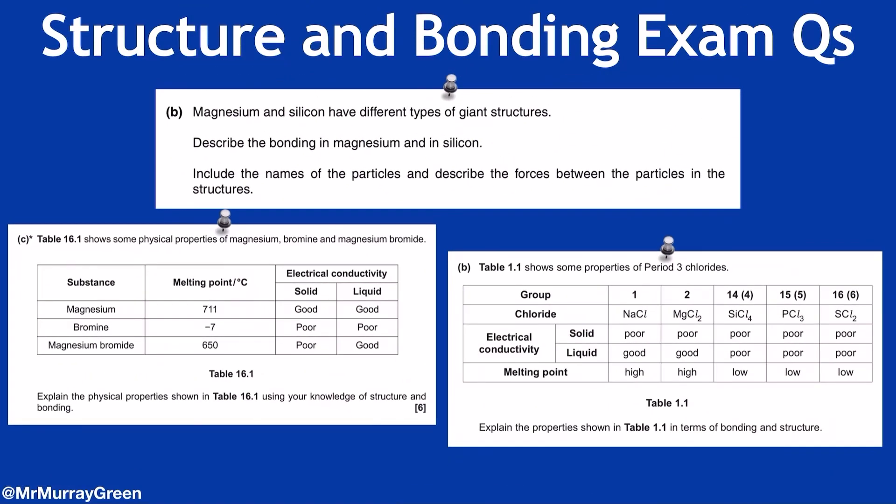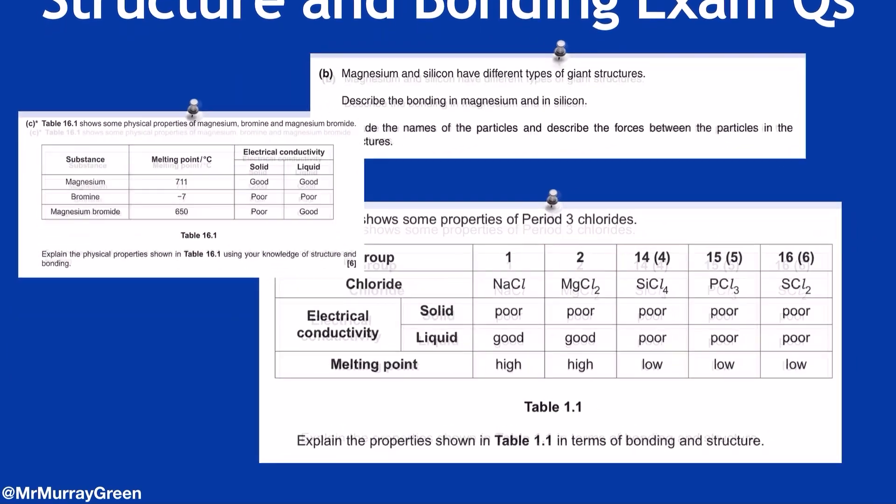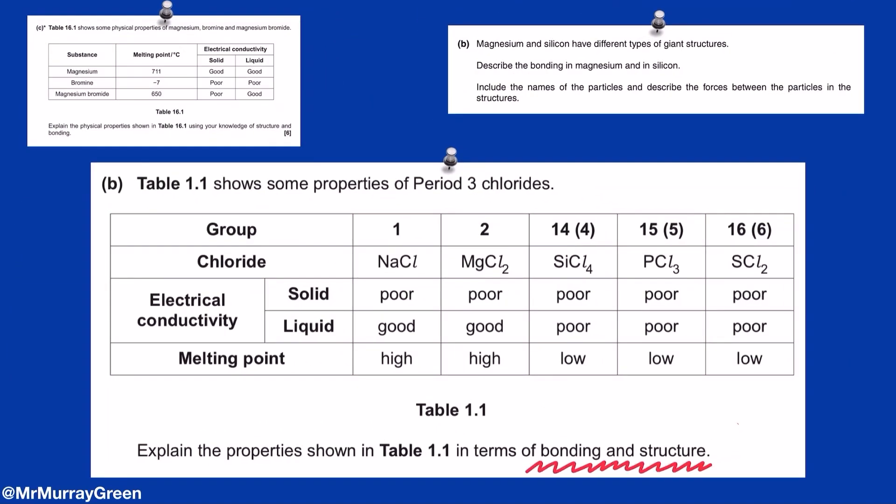Everyone revising for their A-level chemistry exams will be familiar with questions where you need to explain the differences in structure and bonding of some compounds using data like melting points or electrical conductivity. But even after lots of these walkthroughs, you may feel like you're not getting any better from one question to the next.